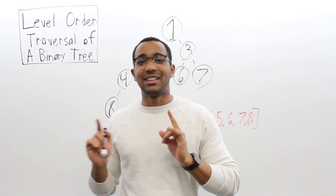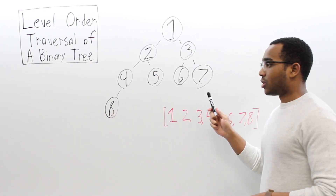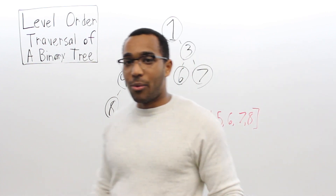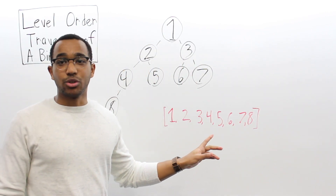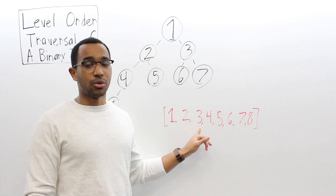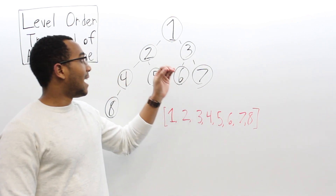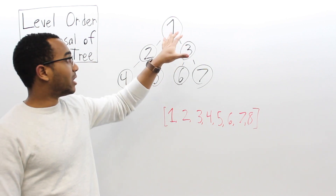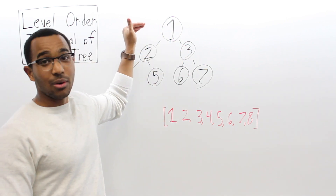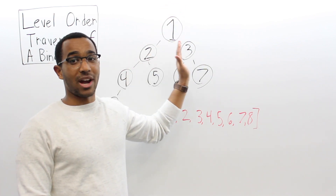Today's question: a level order traversal of a binary tree. What we have here is a binary tree, and what we see is the traversal: one, two, three, four, five, six, seven, eight. How is that related to the way we traverse this tree? As you can see, we go level by level, top to bottom, left to right — one, two, three, four, five, six, seven, eight.